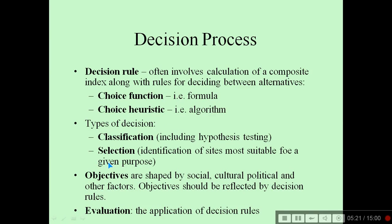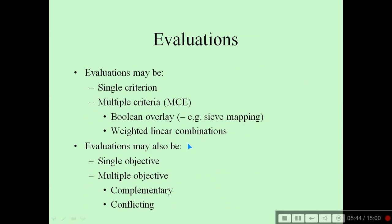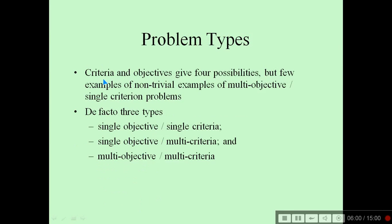Types of decisions may be classification or selection. Classification may include hypothesis testing, while selection involves identification of sites most suitable for a given purpose. Objectives are shaped by social, cultural, political, and other related factors, and should be reflected in the decision rule. Evaluations are the application of decision rules and may be single criterion or multiple criterion — using Boolean overlay and weighted linear combinations. Evaluations may also be single objective or multiple objective — that is, complementary or conflicting. In terms of problem types, we effectively have three: single objective single criteria, single objective multiple criteria, and multiple objective multiple criteria.